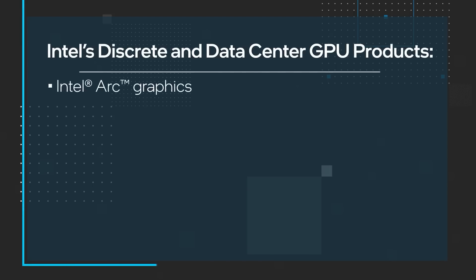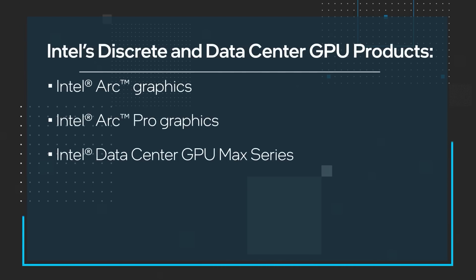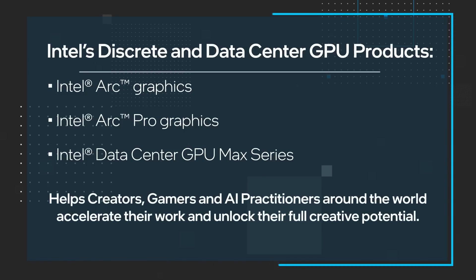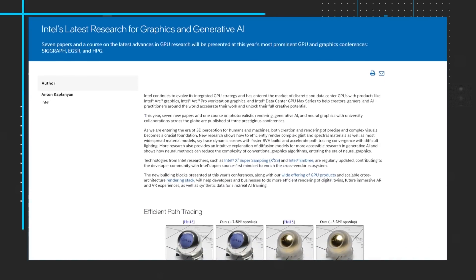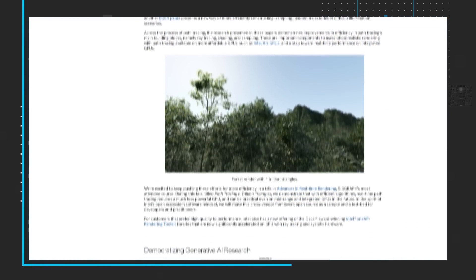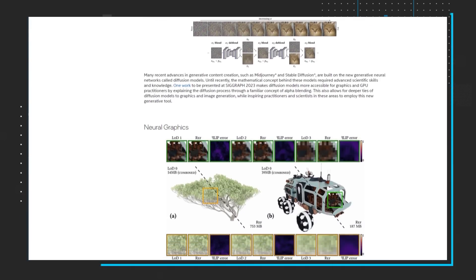Our first story for the month looks at Intel's latest research for graphics and generative AI. Intel continues to evolve its integrated GPU strategy and has entered the market of discrete and data center GPUs with products like Intel Arc Graphics, Intel Arc Pro Workstation Graphics, and Intel Data Center GPU Max series to help creators, gamers, and AI practitioners around the world accelerate their work and unlock their full creative potential. So far this year, seven new papers have been published that detail technologies from Intel researchers contributing to the developer community with Intel's open-source-first mindset to enrich the cross-vendor ecosystem.